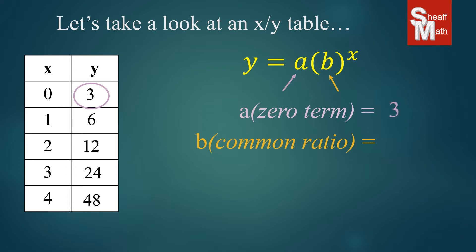Our common ratio is the division of a number by the one that comes before it. So the first one is six divided by three, which is two, 12 divided by six, which is two.